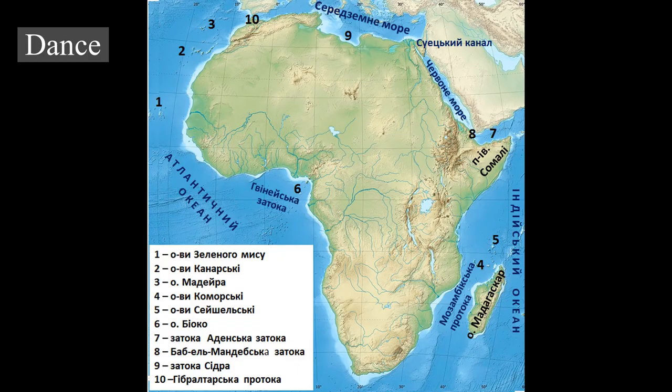54 African countries have football teams in the Confederation of African Football. Egypt has won the African Cup seven times and a record-making three times in a row. Cameroon, Nigeria, Senegal, Ghana, and Algeria have advanced to the knockout stage of recent FIFA World Cups. South Africa hosted the 2010 World Cup tournament, becoming the first African country to do so.